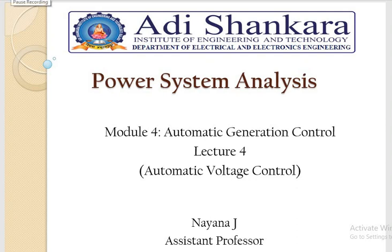Welcome. Today we will be discussing the last topic of the module, that is Automatic Voltage Control. So far in the previous three lectures we have been discussing Load Frequency Control - how the speed is adjusted to control the frequency of the output of a machine. Using the turbine speed governing system, by controlling the steam valve mechanism, we controlled the speed and thereby the frequency. Now in this second part of automatic generation control, we are controlling the output voltage of the generator.